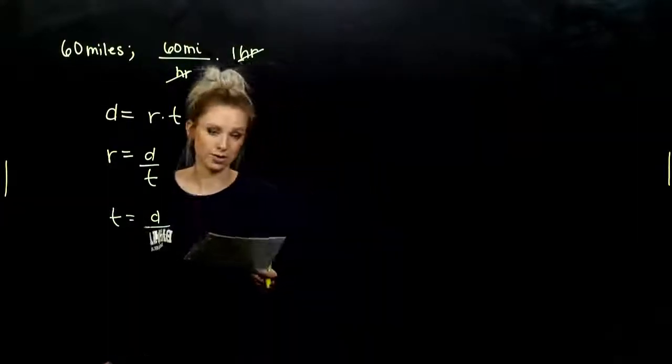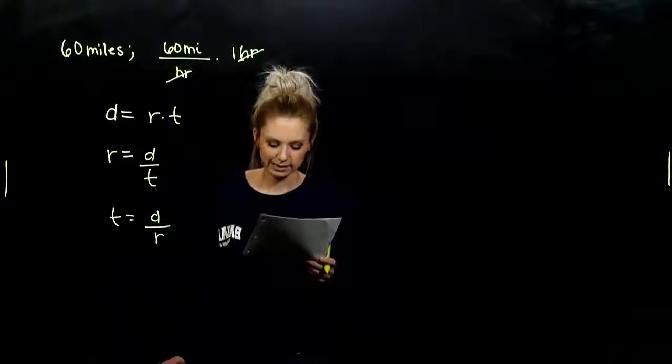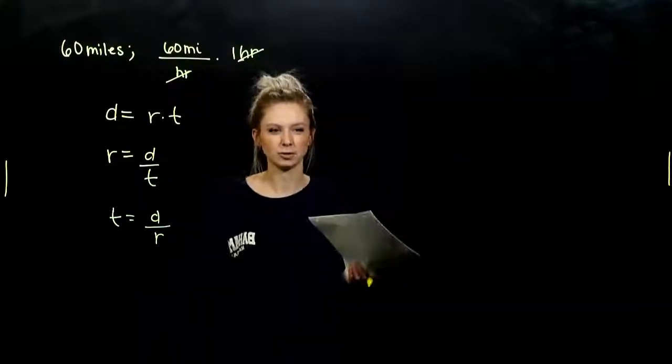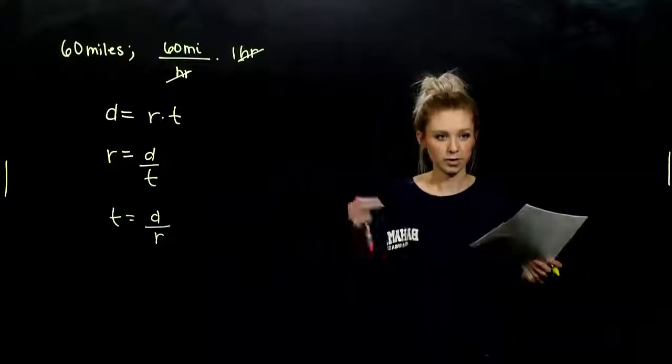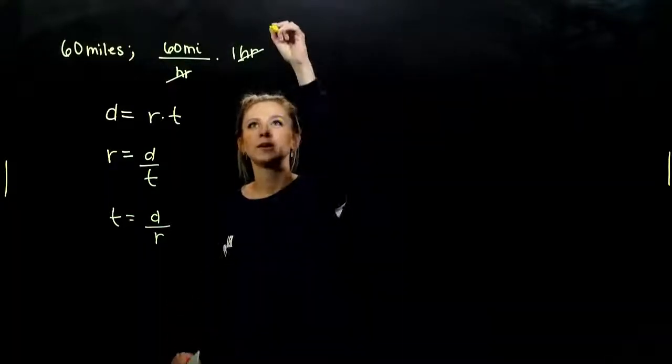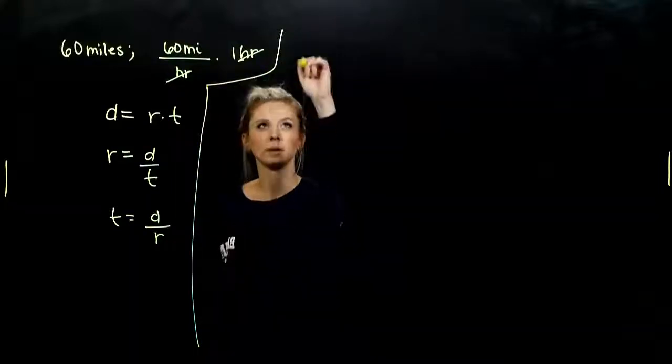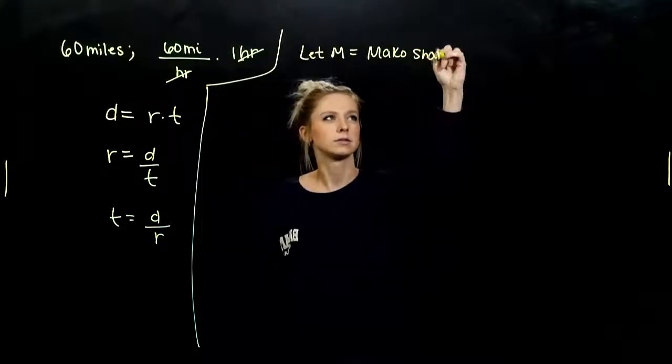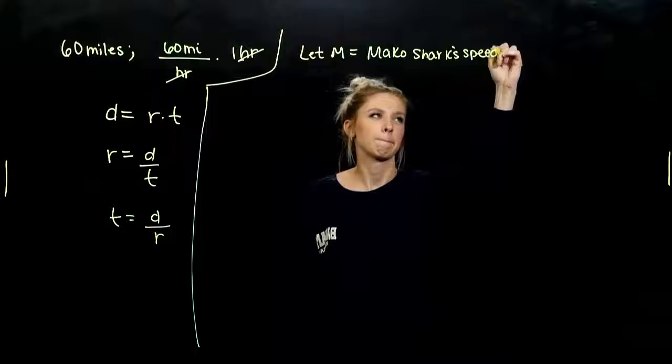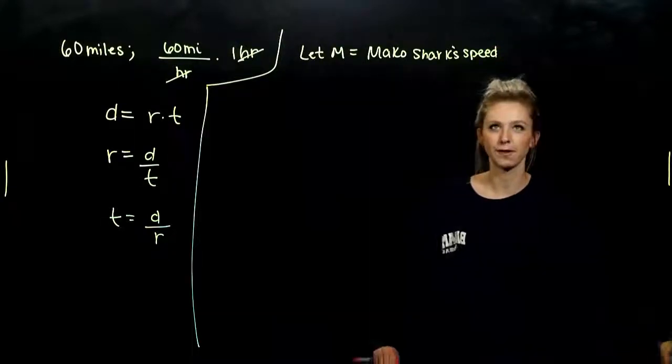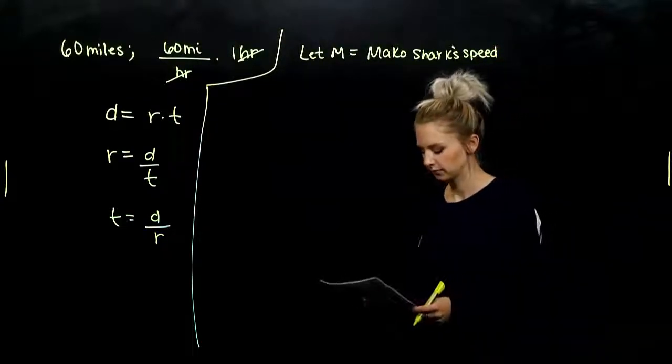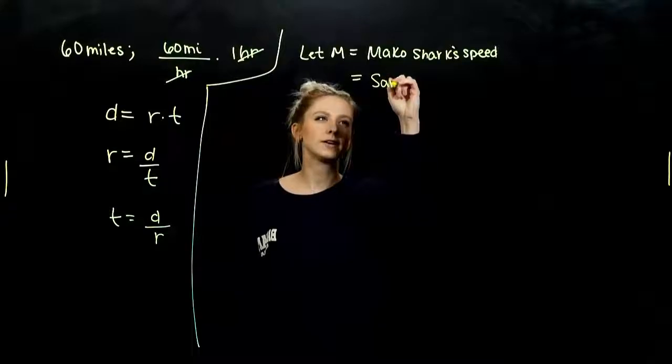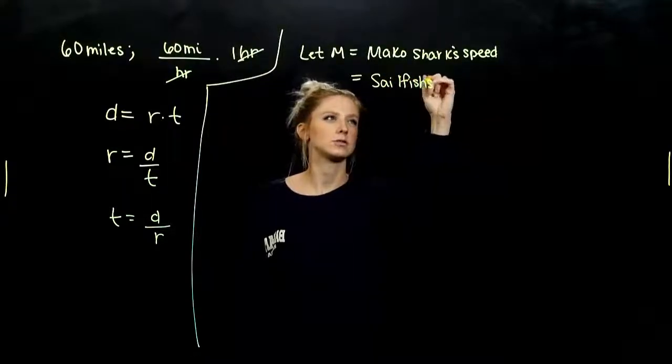So it's a lot of information, but we can parse it down as we go. So what are we being asked to solve for? That's our first question with these. I need to find the speed of each sea animal. So when I go to label and assign variables to my unknowns, I need to pick a variable and give it to an animal. The order doesn't matter, but I am going to let M be the mako shark's speed or rate. And if that's true, then what can represent the sailfish? The sailfish's speed.